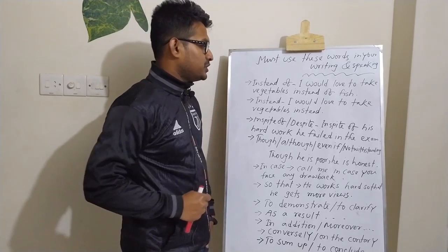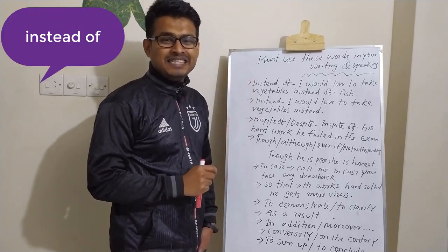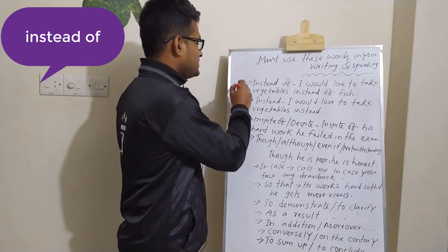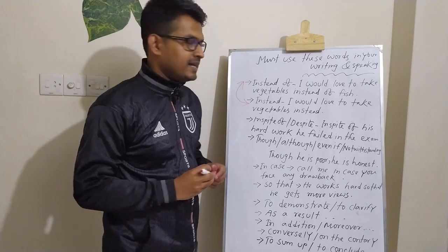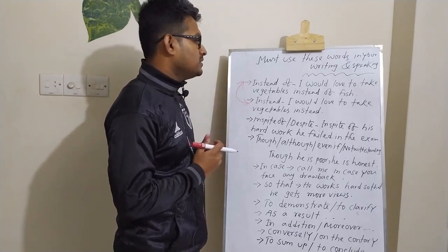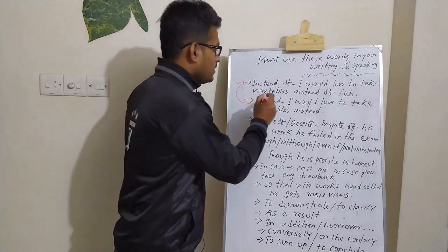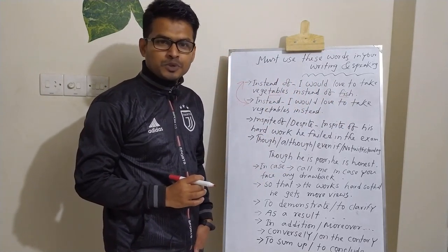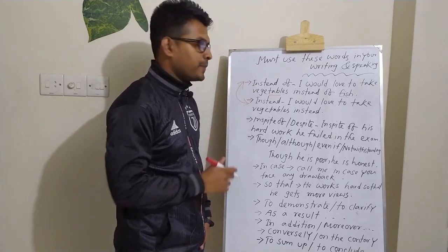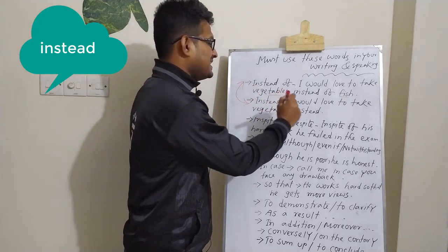First of all, 'instead of.' I would love to take vegetables instead of fish. That's why you say 'instead of.' And the next one, you see, I would love to take vegetables instead.